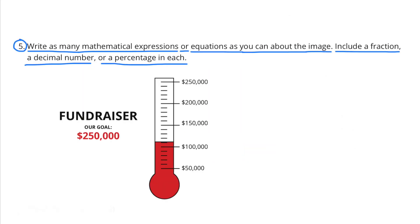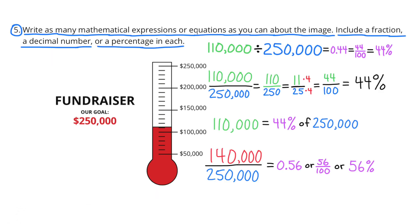Number 5: Write as many mathematical expressions or equations as you can about the image. Include a fraction, a decimal number, or a percentage in each. Well, it says that their fundraiser goal is $250,000, and the image shows that so far they've raised $110,000. 110,000 divided by 250,000 is 0.44, which is the same as 44 hundredths. They've raised 44%.